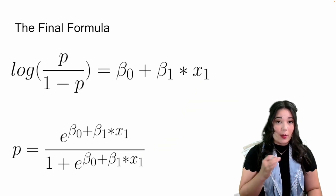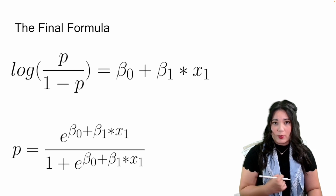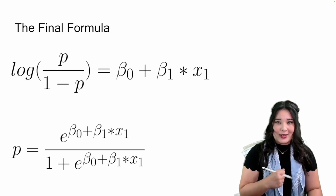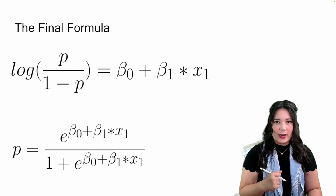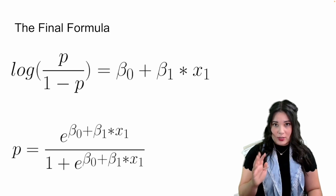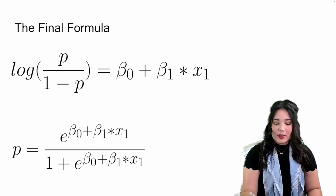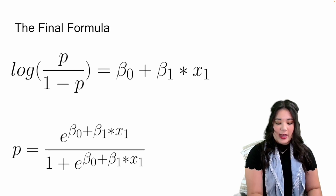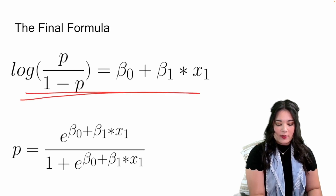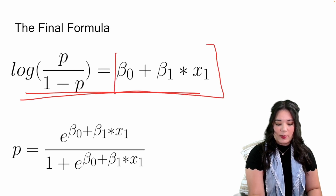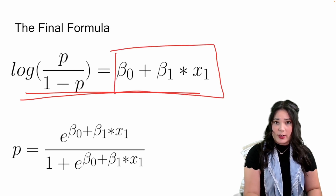So in summary: first we tried to predict probabilities using linear regression, but that had problems. Then we tried to predict odds, but that didn't give us the shape we wanted. Finally, we tried to predict log odds using linear regression, and we got that S-shaped curve we were looking for. In the end, our formula is that the log odds of something happening are predicted using a typical linear regression formula.